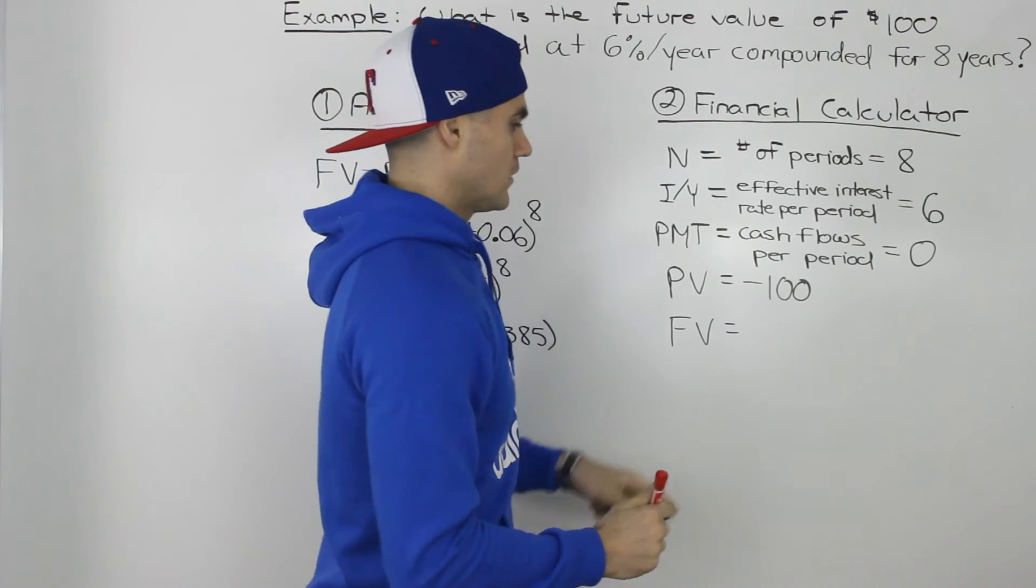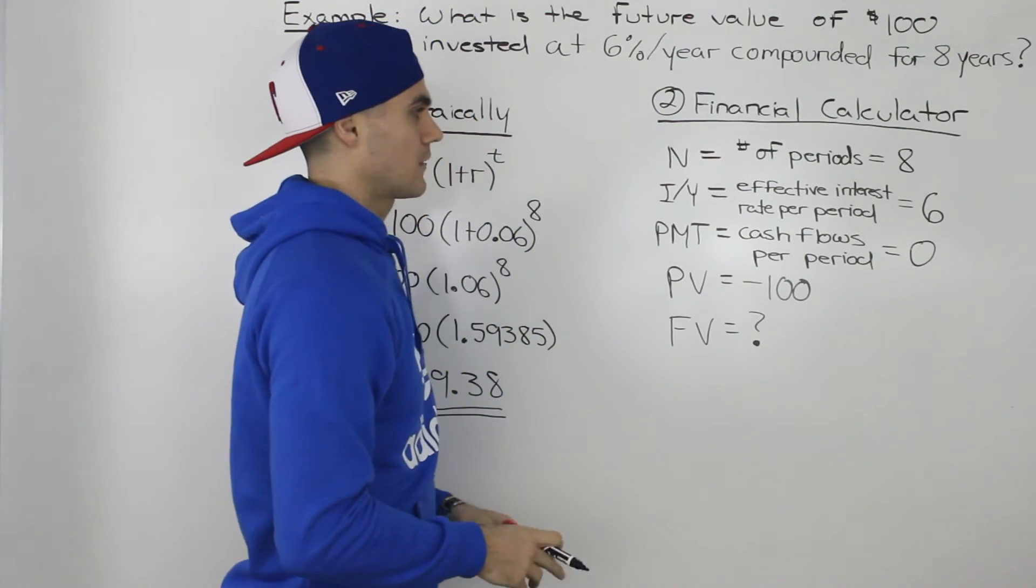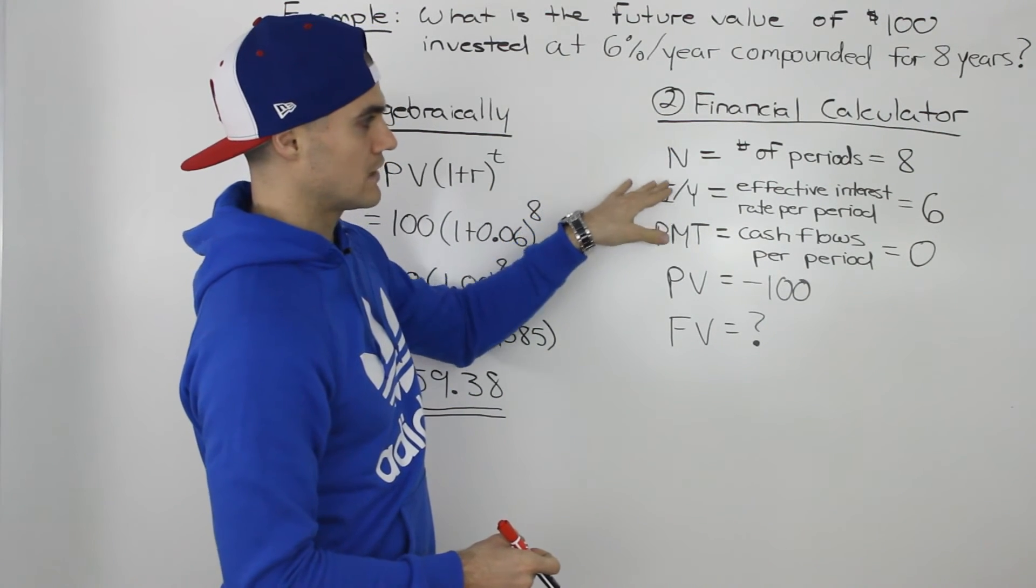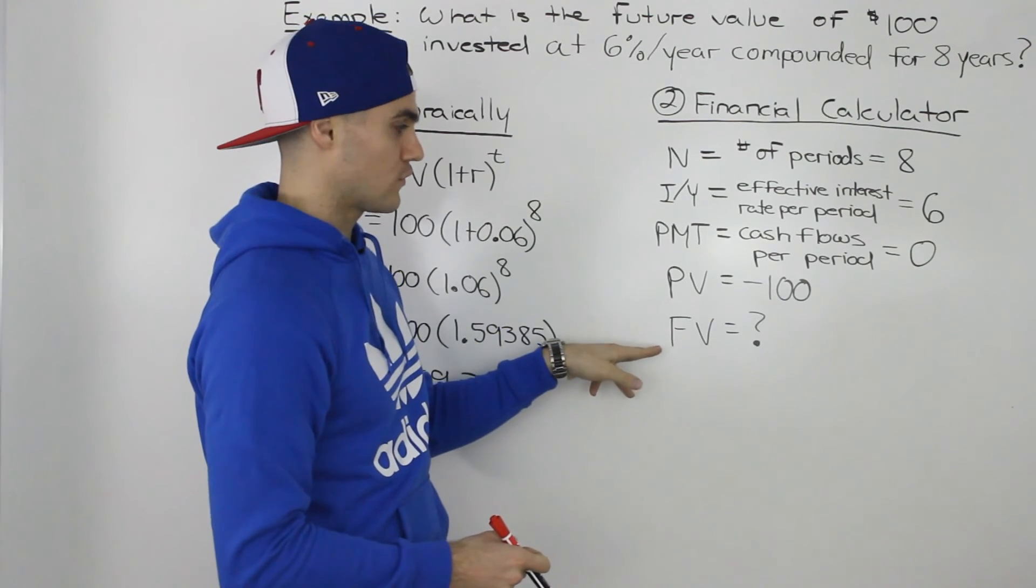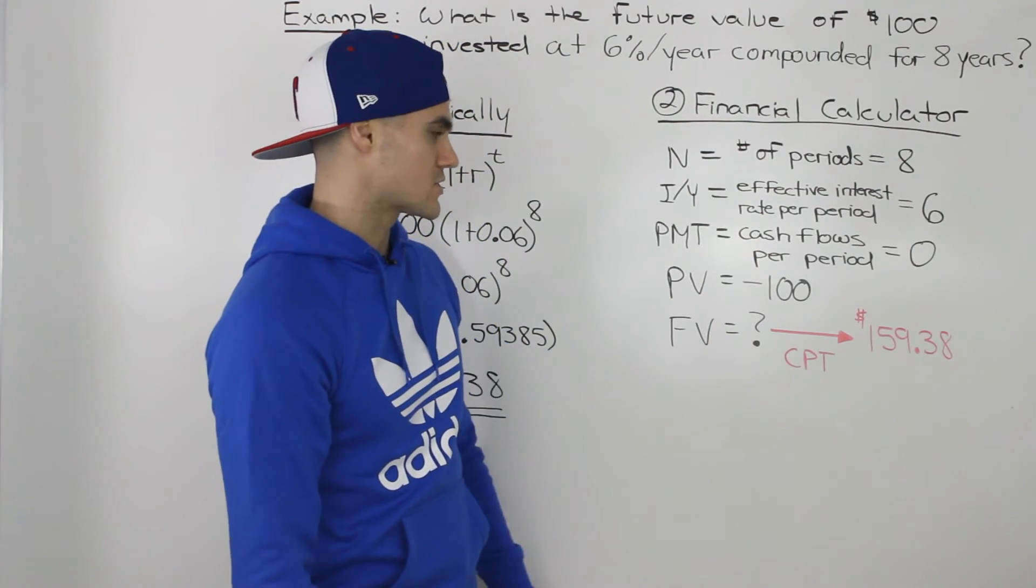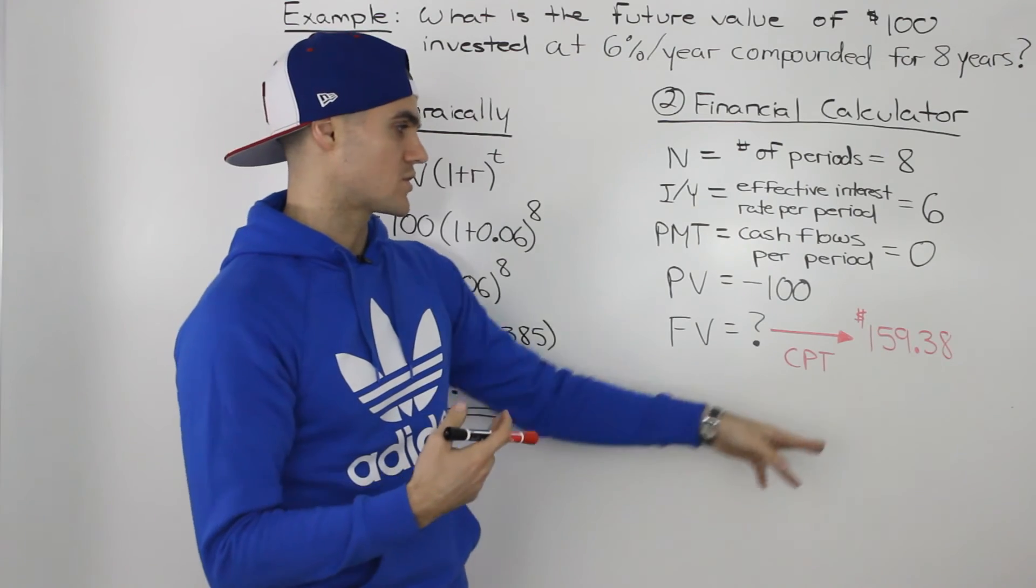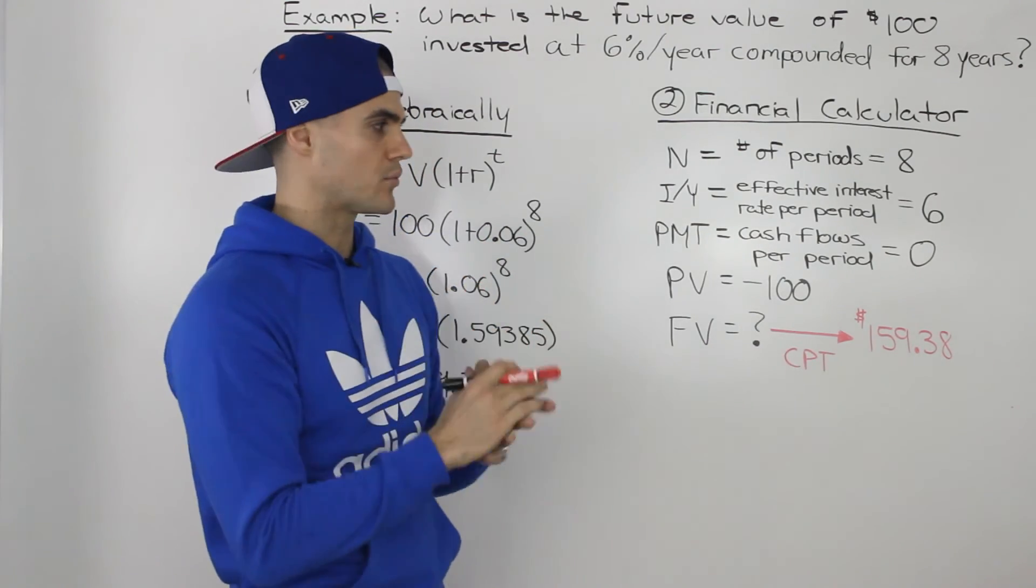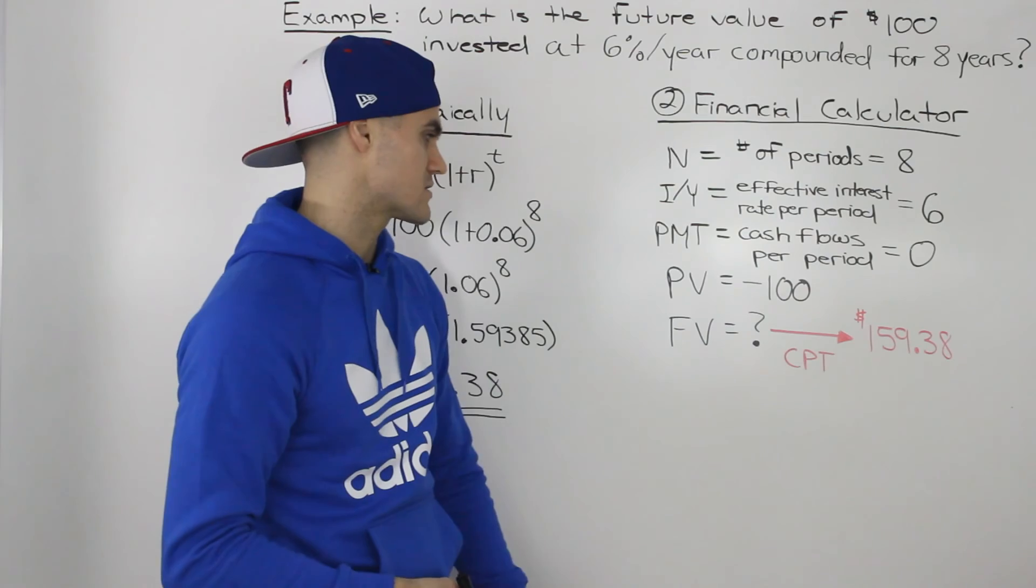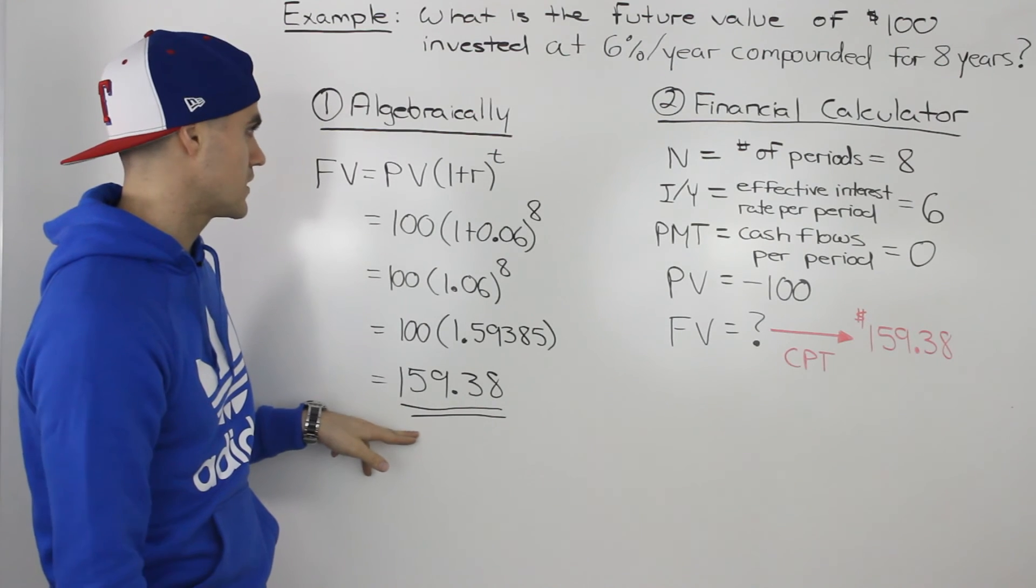So then the future value, we don't know what that is. We're actually figuring that out. So here you would put a question mark, because that's what we're actually computing. So what you want to do is you want to write out these five variables. Make sure that you have a number for four out of the five of them. And then for the one you're solving, just put a question mark. And then when you actually compute the future value, once you've inputted those four other variables, you would get 159.38. And you'll actually get a positive amount. So what that means is that you're getting 159.38. Because initially you invested it, so it was negative 100. And now you're getting it back. So that's positive. It should come out positive in your calculator. And notice how this amount is the same as this amount that we calculated algebraically.